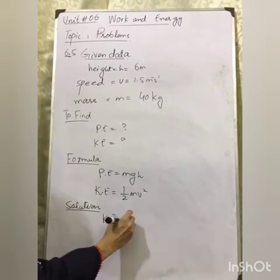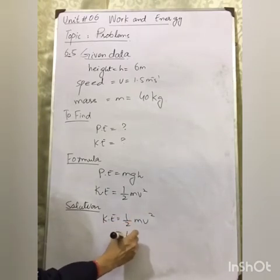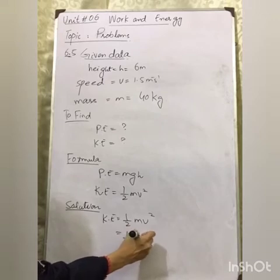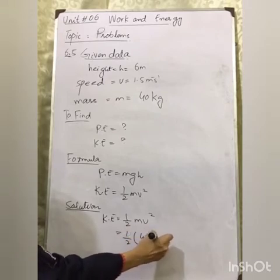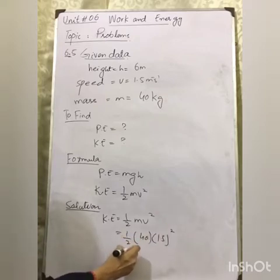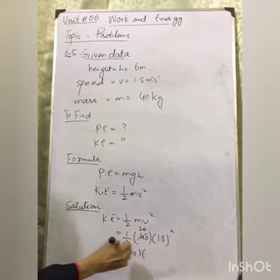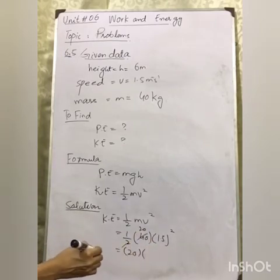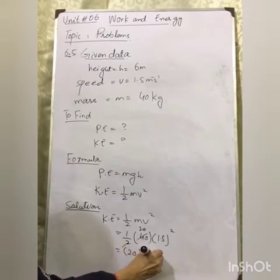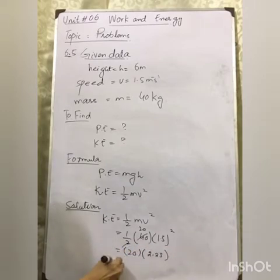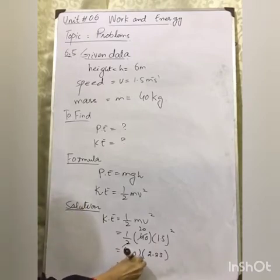Kinetic energy equals half mv squared: one half times 40 times 1.5 squared. The half cancels to give 20, and 1.5 squared equals 2.25, so the answer is 45 Joule.